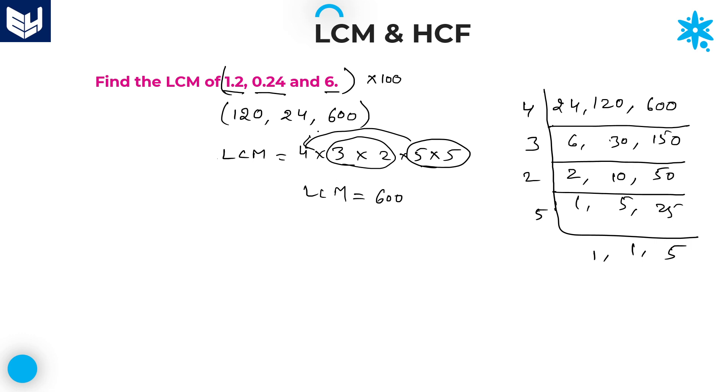But if you want to calculate the LCM of these numbers, initially you multiply with 100. Once you get this number, you have to divide with 100. Why? Because initially you multiply all the numbers with 100. But if you want to get the LCM of only 1.2 and 0.24 and 6, you have to divide with 100. LCM is equal to 6. LCM of 1.2, 0.24 and 6, which is equal to 6. 6 is the right answer for this question.